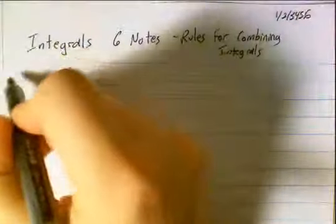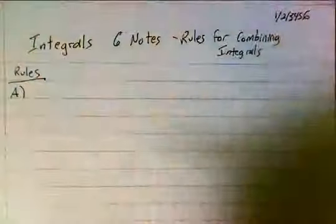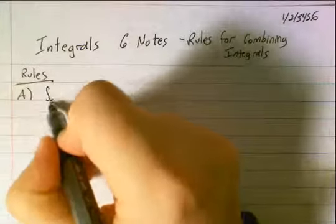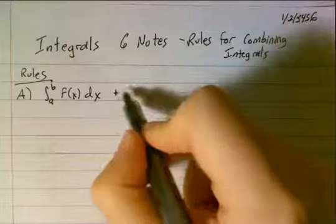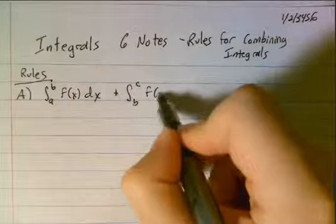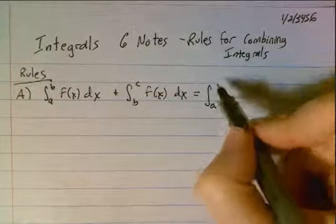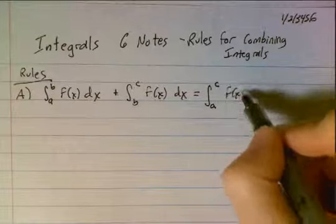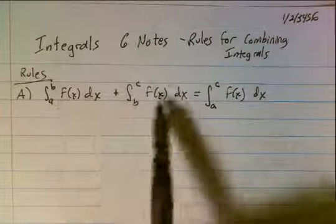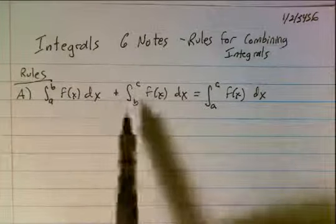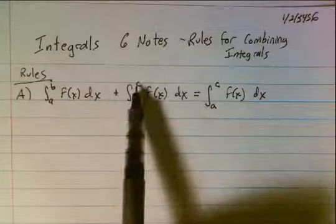The first rule: if we have the integral from a to b of f(x) dx and we add the integral from b to c of f(x) dx, that equals the integral from a to c of f(x) dx. Basically, if you have two integrals with the same function and they share a common bound, you can just combine them and go all the way from a to c.